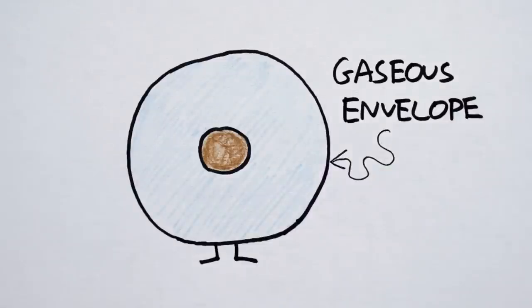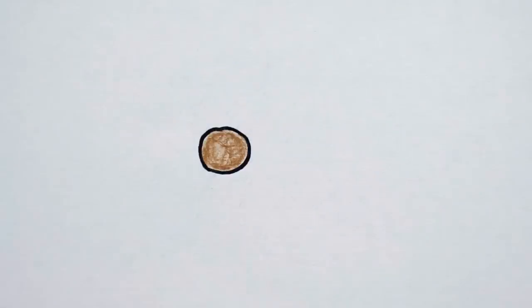Once all the gas is gone, we're left with just a rocky core, hence why we find hardly any gaseous planets with orbits of less than 3 days. They've all evaporated away.